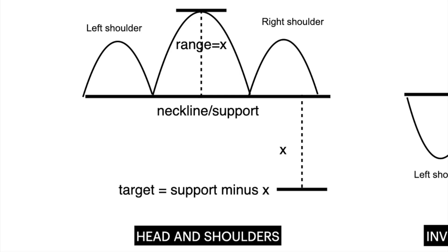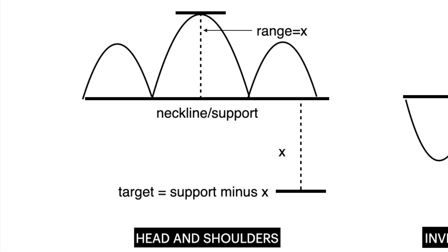A head and shoulders pattern is a reversal pattern made up of a peak or left shoulder, followed by a higher peak or the head, and then another lower peak or the right shoulder. A neckline connects the lowest points of the troughs horizontally. The line can be horizontal or sloped up or down. When the slope is down, it produces a more reliable signal. The price target, if the neckline is violated, is based on the height of the head X, which is subtracted from the neckline's price value.